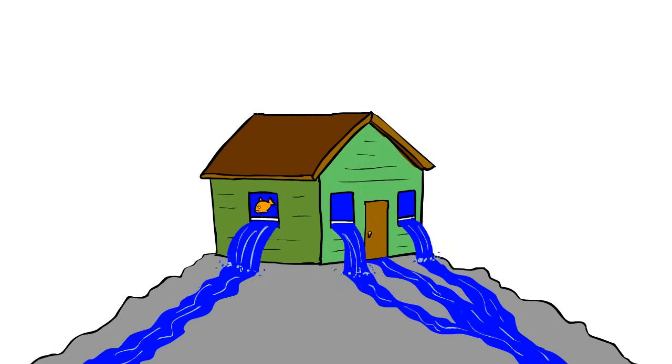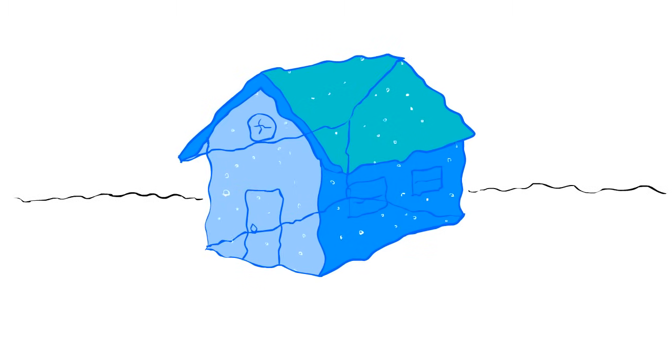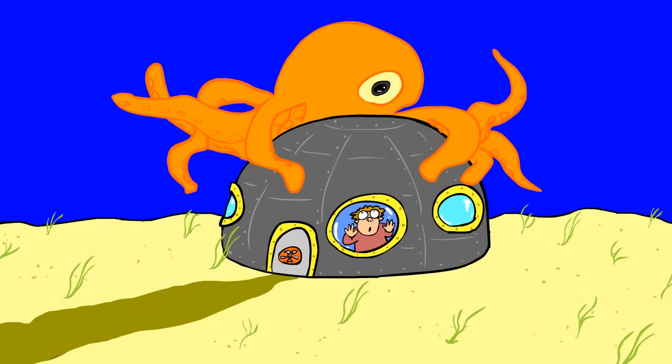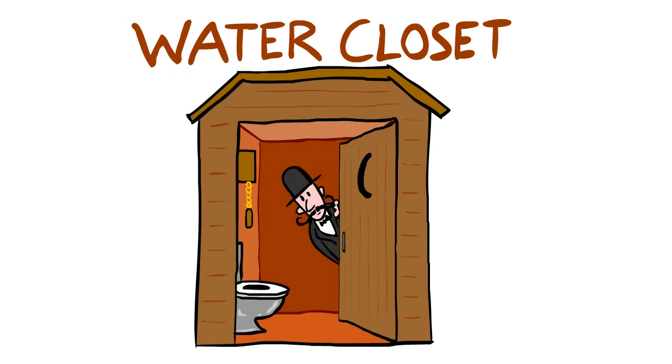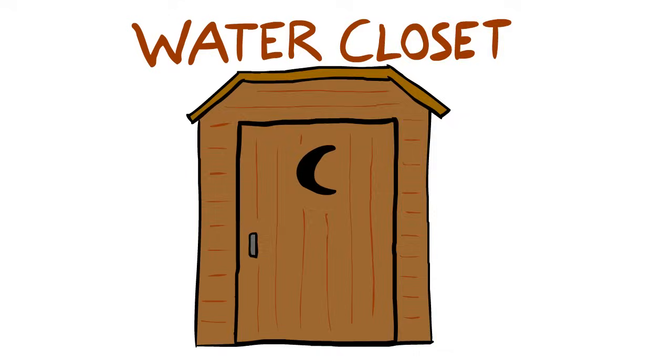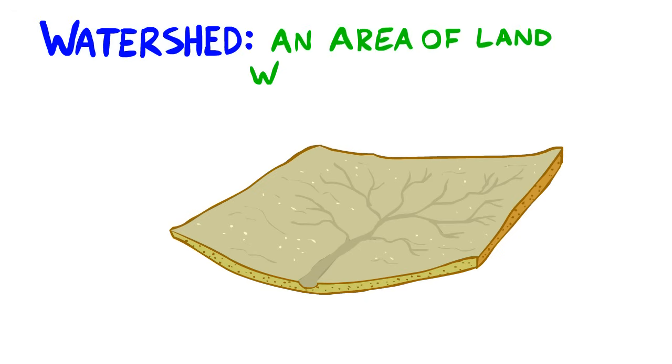Now a watershed isn't this or this or this, and it's definitely not to be confused with a water closet, which is an old-timey term for a bathroom. No, a watershed is an area of land where surface water drains down to a single point, be it a stream, lake, or ocean.